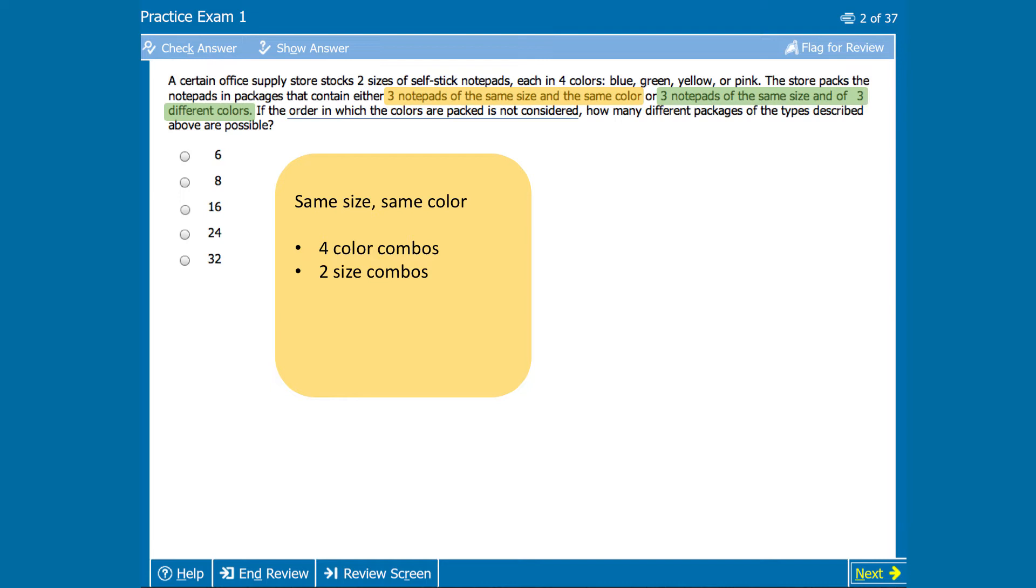If we have four options for color, and each of those options can come in two different sizes, there are four times two equals eight different packages where both color and size are the same. Okay, awesome. Let's move on to our second type of package.